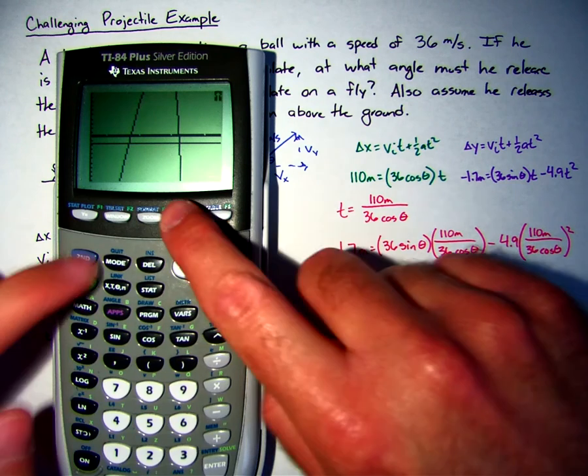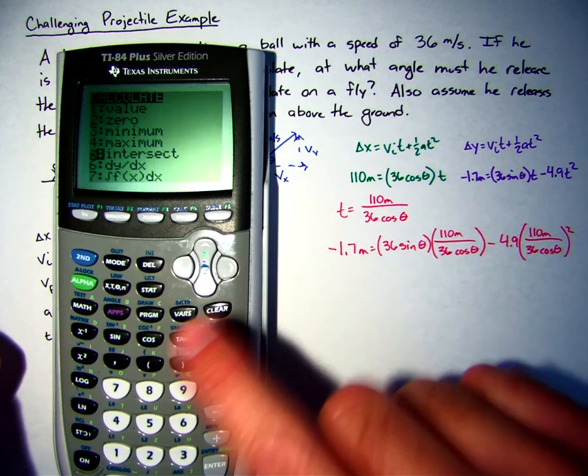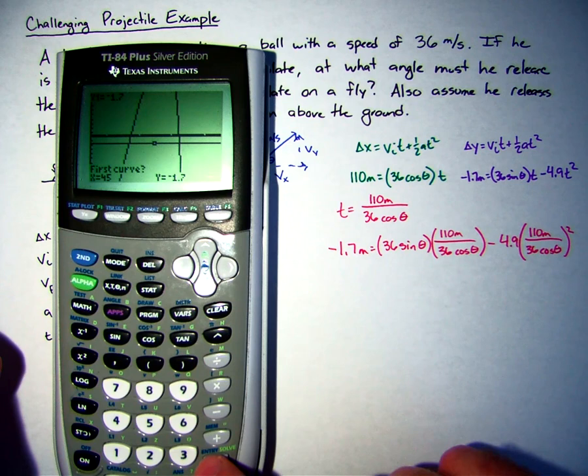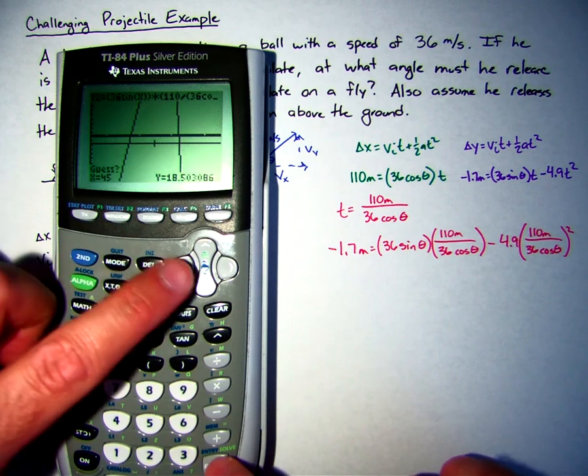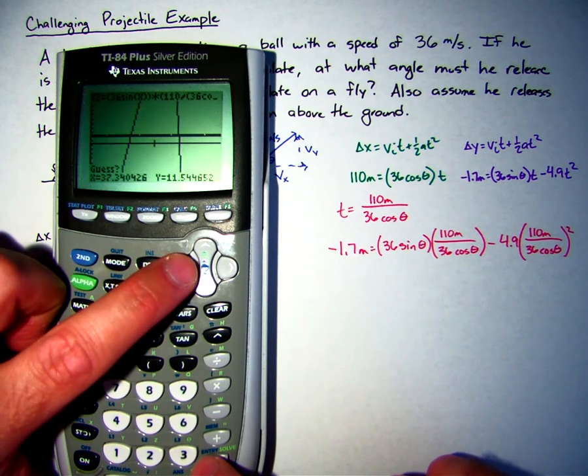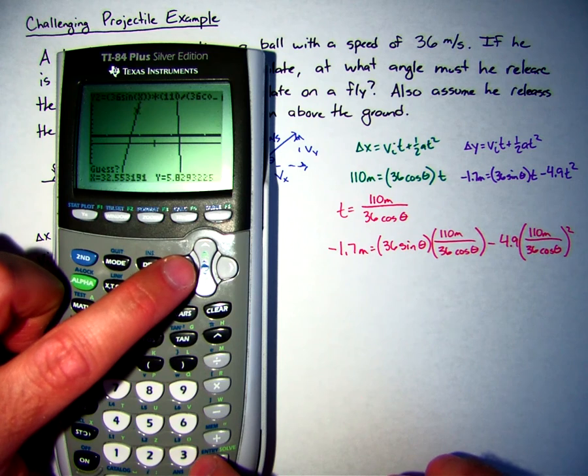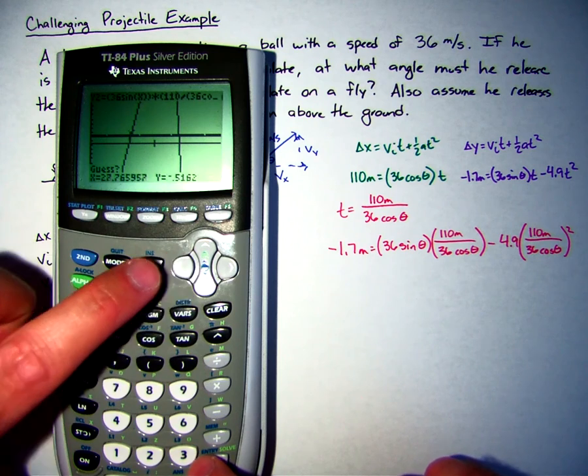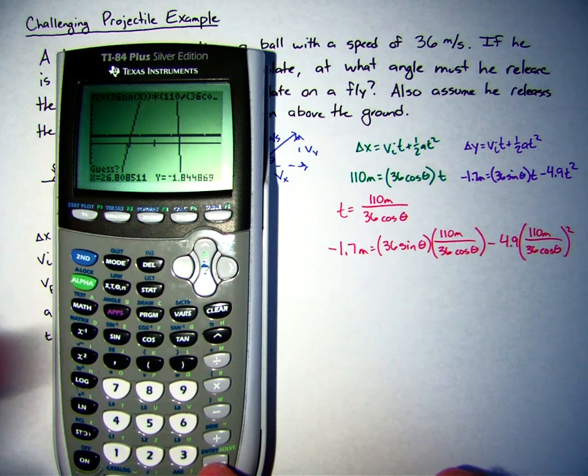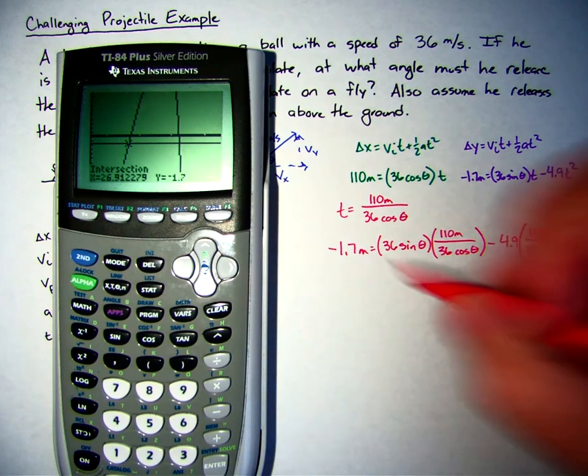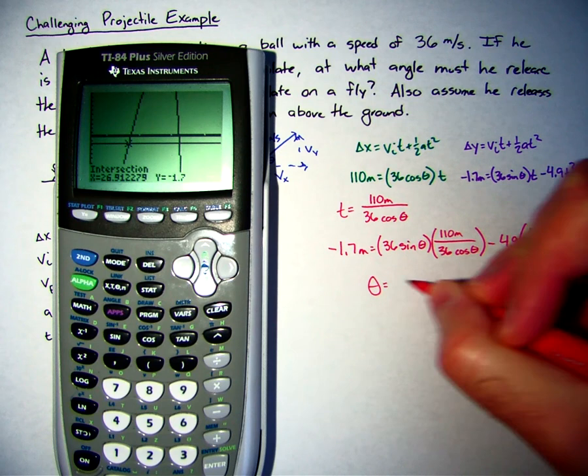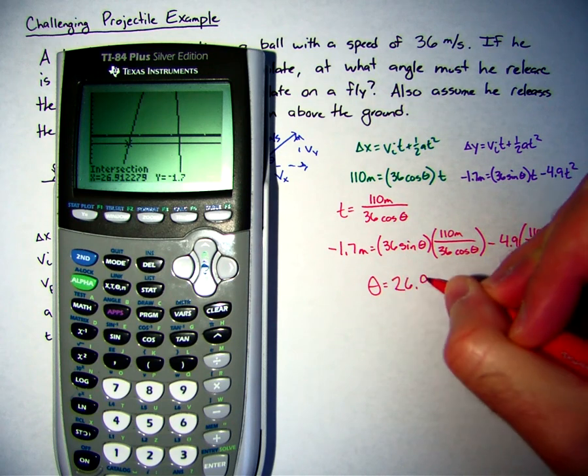Same thing as before. We just second calc, intersection, first curve press enter, second curve enter. Now, for the guess, I'm just going to use the cursor and go to as close as I can to this first intersection point. Press enter, and it'll calculate it, and it gets an angle of 26.912 degrees.